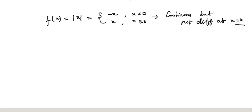Graphically, we can easily understand the graph of this function. This function is differentiable except at x = 0. At x = 0, there is a sharp curve, so at that particular point the function is not differentiable.